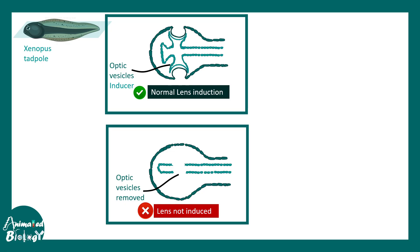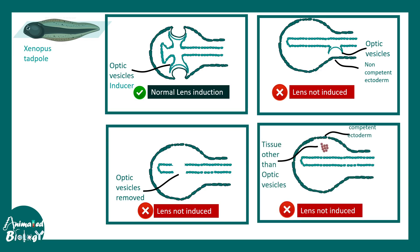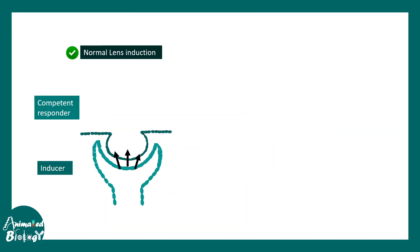This is demonstrated by experiments where removing the optic vesicle means the lens is never induced. If the optic vesicle is present underlying a non-competent ectoderm — one that lacks the capability to follow the instructions provided by the optic vesicle — lens is never induced either. Placing a random tissue other than the optic vesicle beneath competent ectoderm also does not produce a lens. The right inducer and the right competent responder must match.